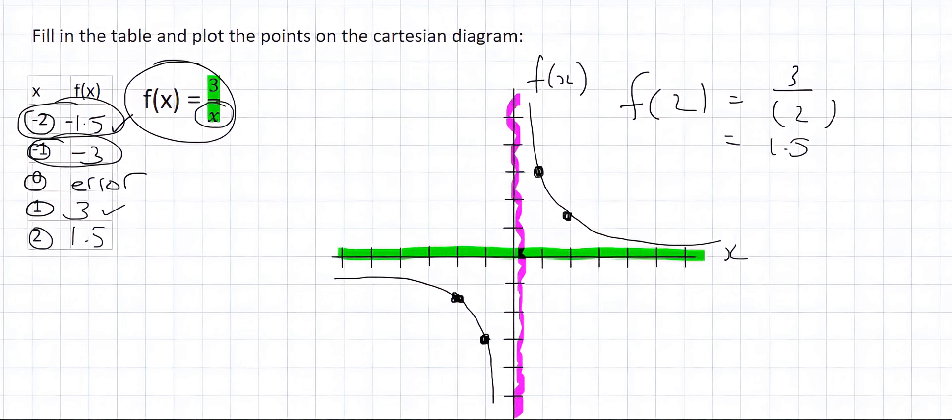Now remember, we saw asymptotes with exponential graphs, but in exponential graphs we only had one asymptote. This type of graph is going to have two. And that's why this error feature comes up, because it's actually telling us that the graph doesn't exist there. So it's an asymptote. So let's move to the next example.